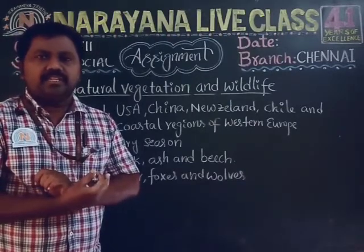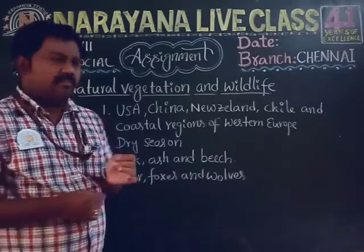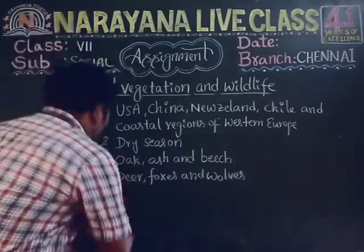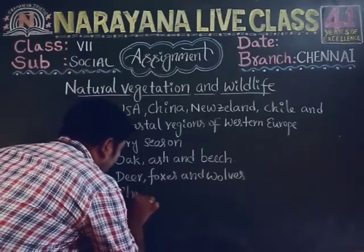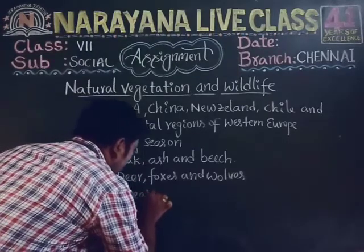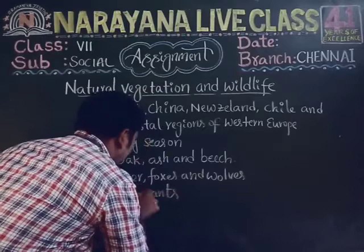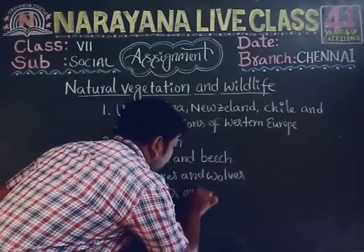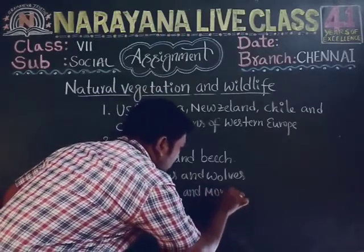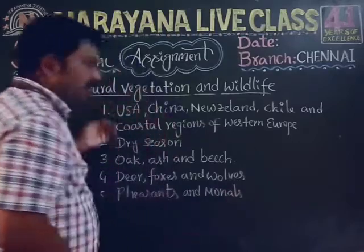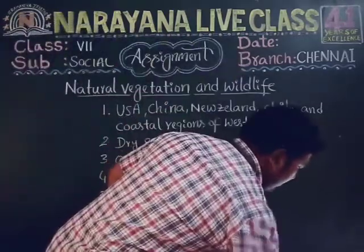The fifth question: name some birds found in temperate deciduous forests. The answer is pheasants and monals.